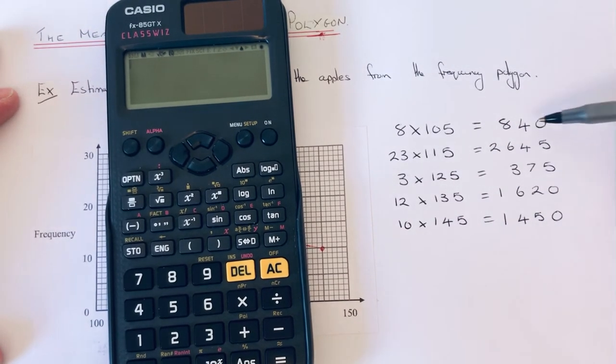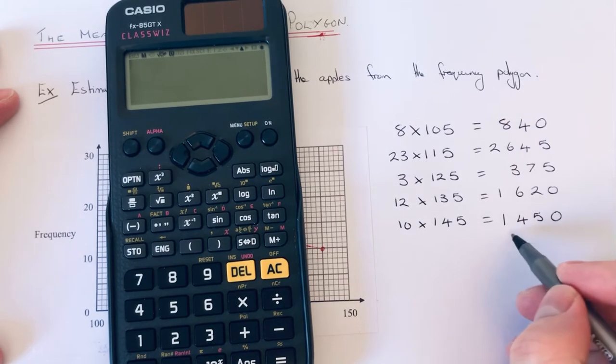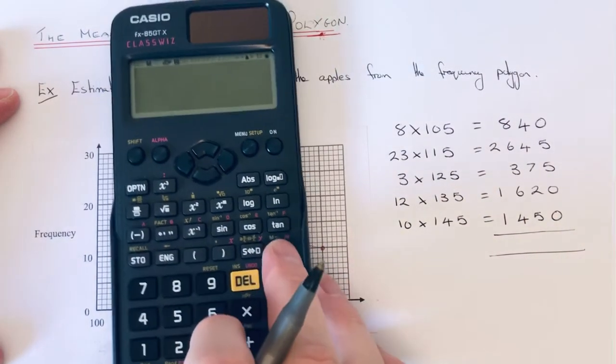If we add these five numbers up that will give us the total weight of all the apples.